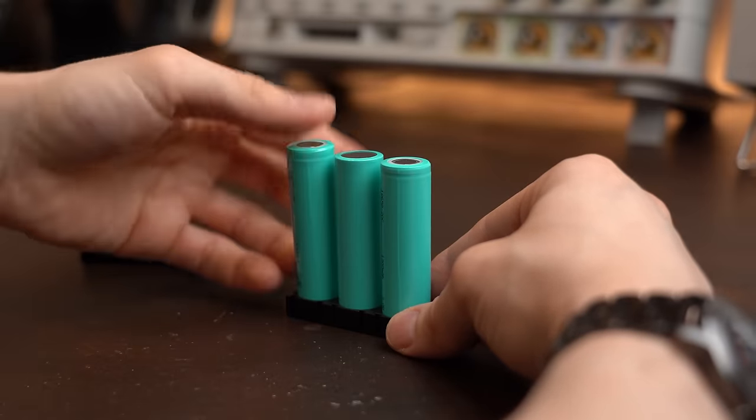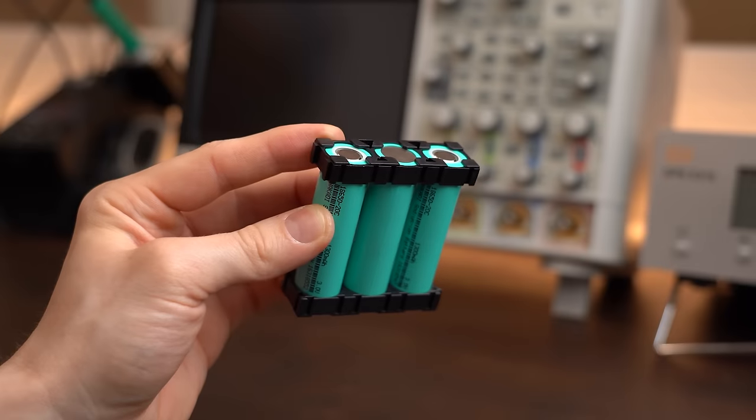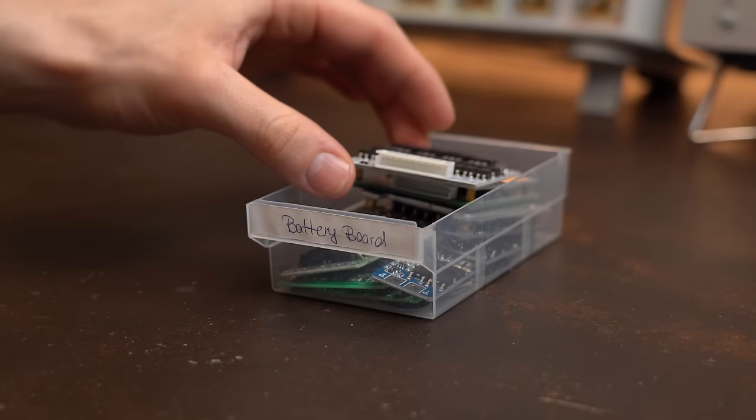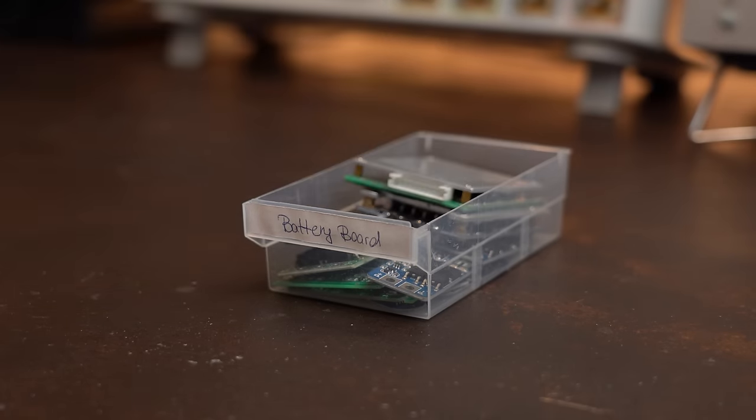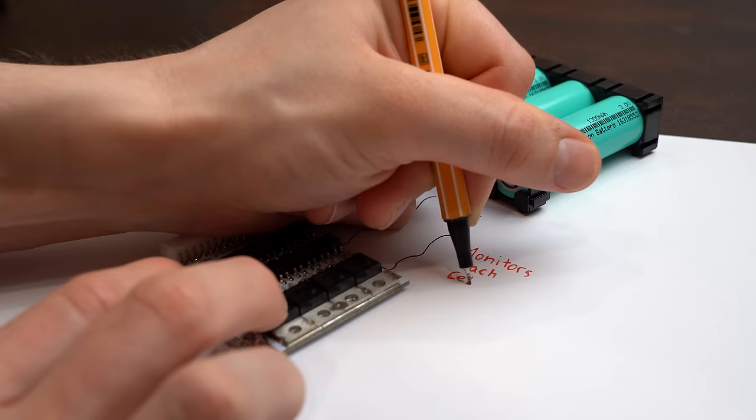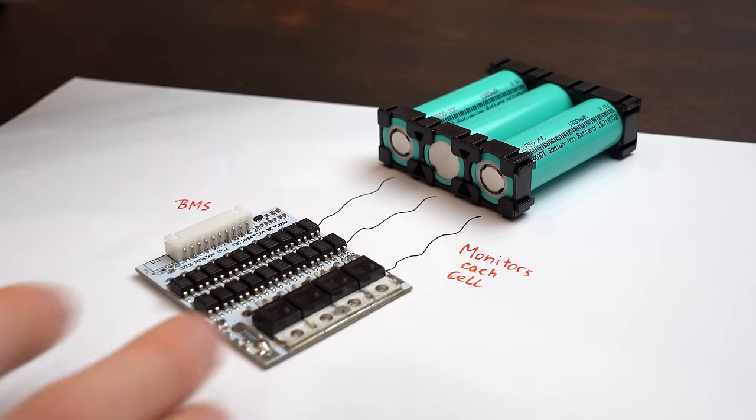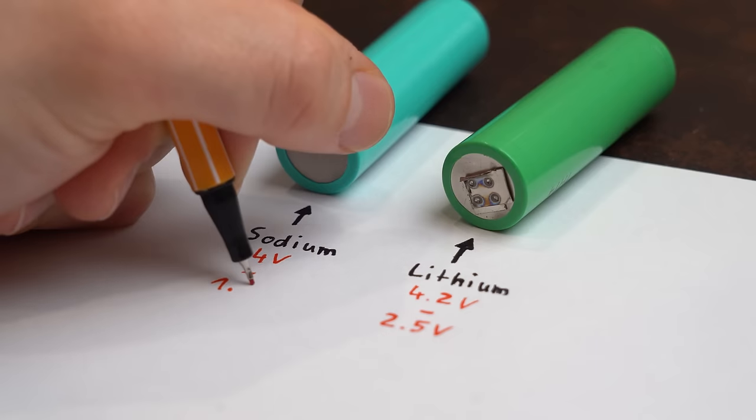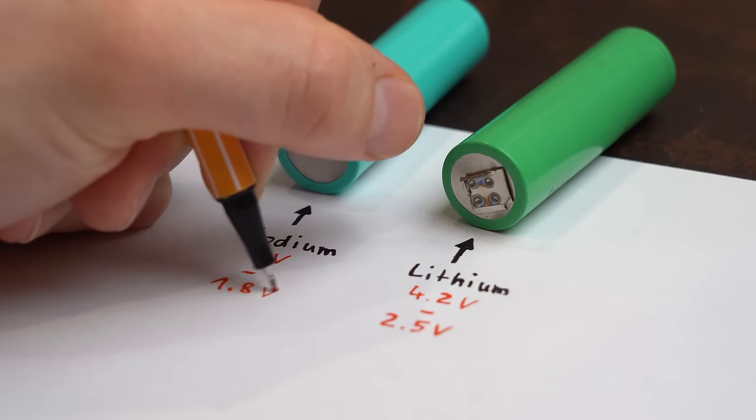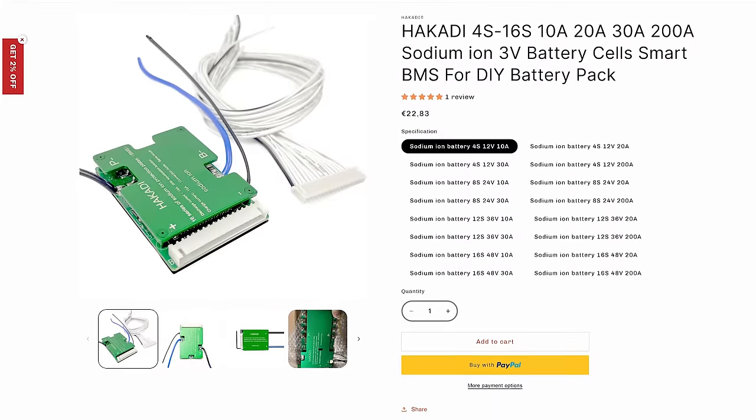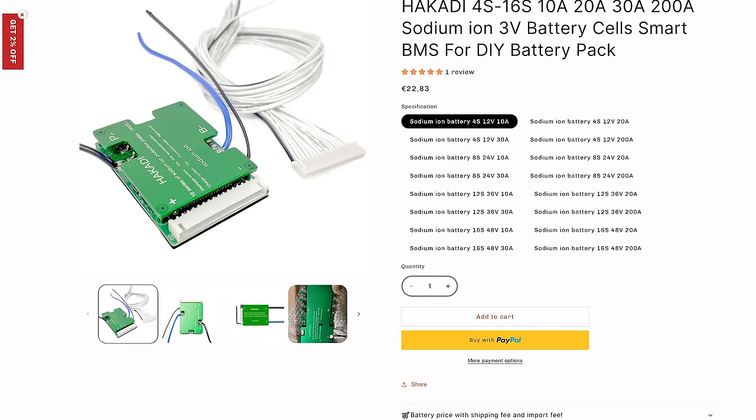And if you want to put multiple cells in series in order to form a powerful battery pack then you also need a battery management system, aka BMS, to keep each individual cell safe from overcharge and over discharge which now also needs to work with other voltage levels. But thankfully there already appears to exist a commercial version.